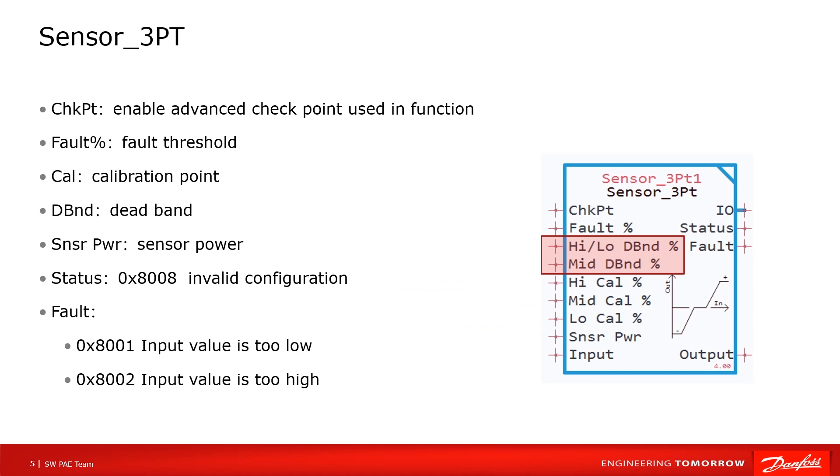Dead band. High and low dead band and middle dead band. The purpose of dead band is to define the range where outputs stay at 100%, minus 100%, and zero. Sensor power is the reference value of input signal, generally set to supply voltage of input device. Input is the signal from input device.